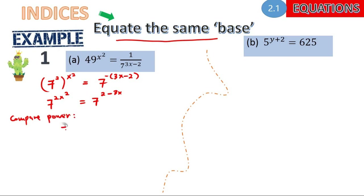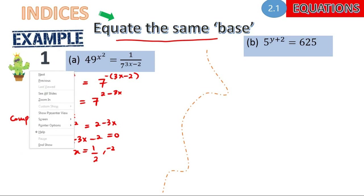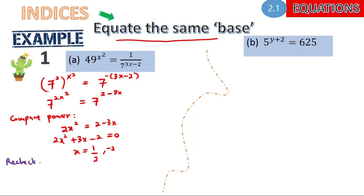We should have 2x² equals 2 minus 3x. Expressing this as a quadratic equation, we get x = 1/2 as well as x = −2. You can use your calculator here. Please don't forget one of the important things: you also need to recheck your answers — determine which are accepted.